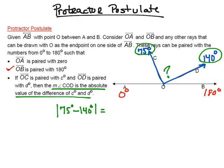If I do 75 minus 140, we end up with negative 65. However, they did tell me to take the absolute value of that, so the absolute value would be a positive 65 degrees. So in other words, this angle right here would measure 65 degrees.